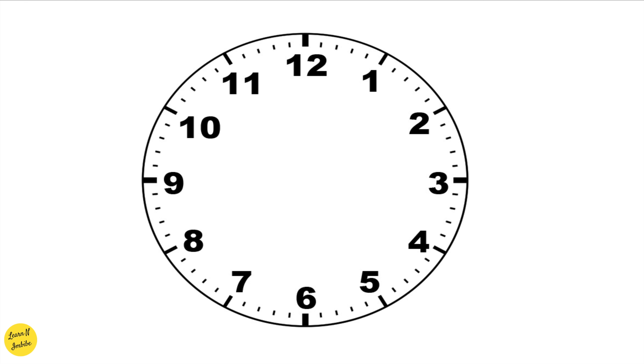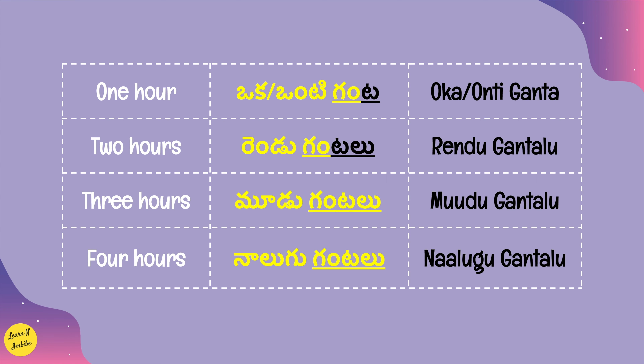One hour consists of 60 minutes and each minute consists of 60 seconds. Now let's see how to read a clock starting with hours. In my previous video I mentioned numbers 1 to 100, so once you are familiar with those numbers, reading a clock will be much easier.